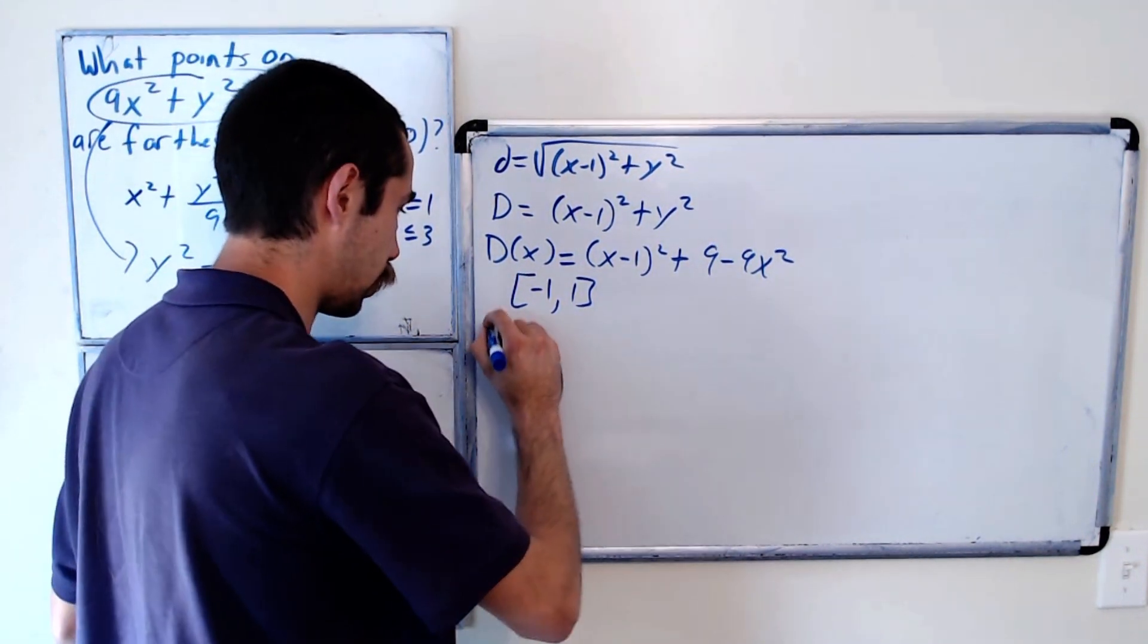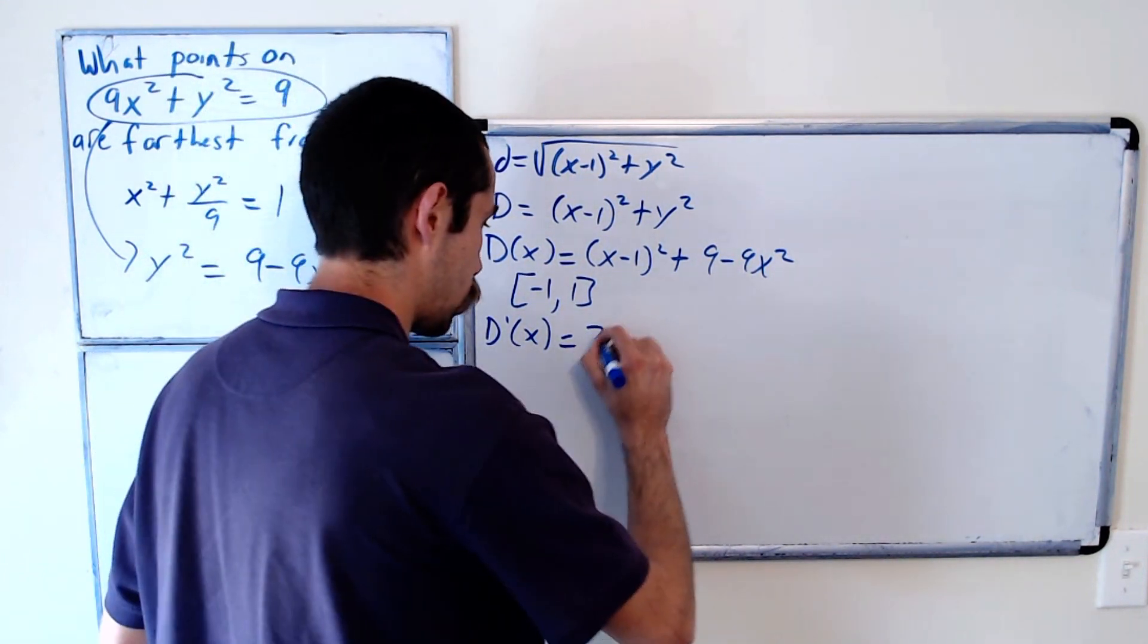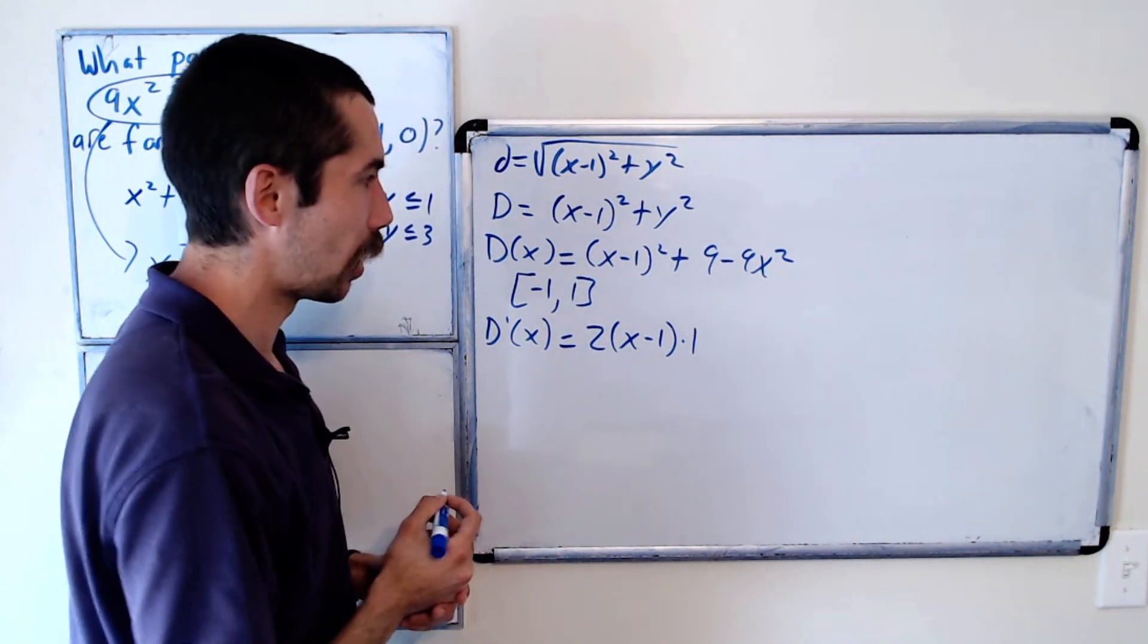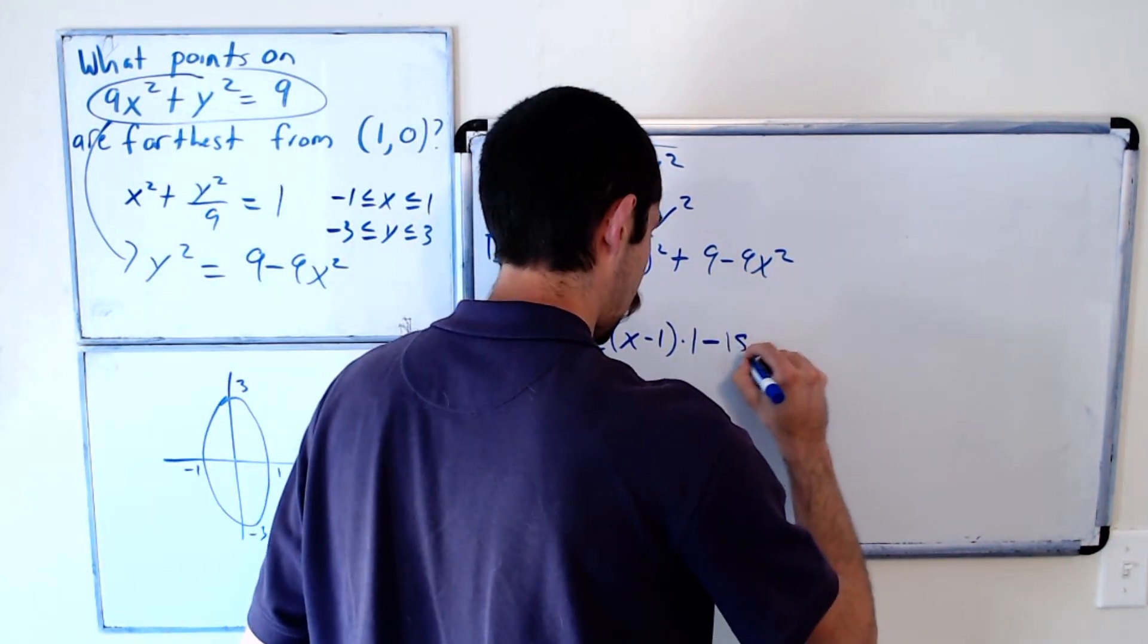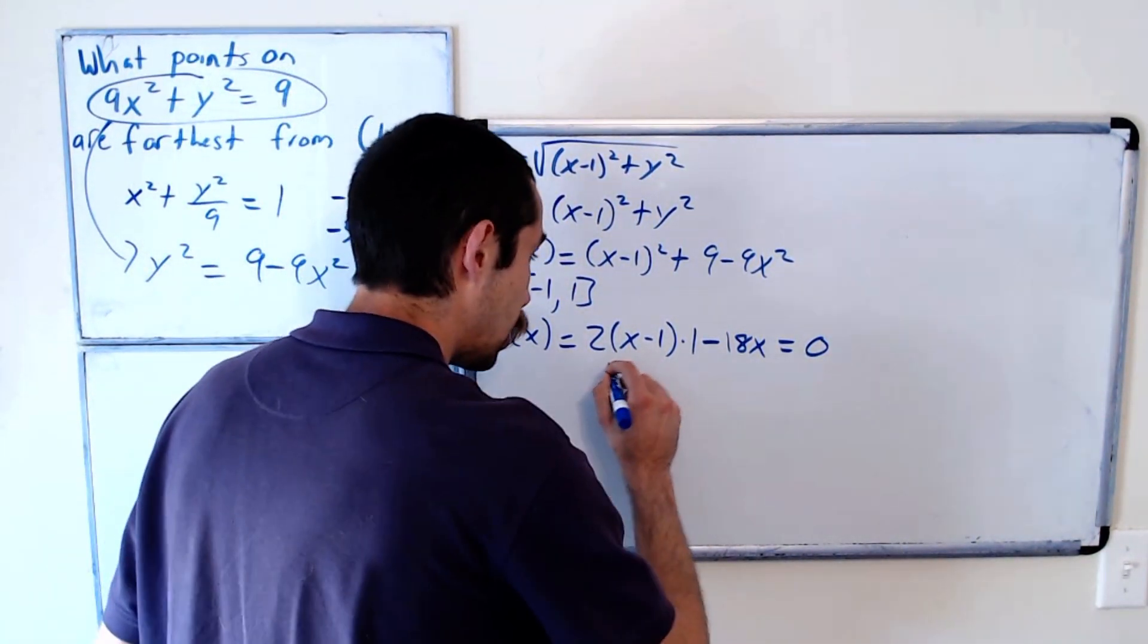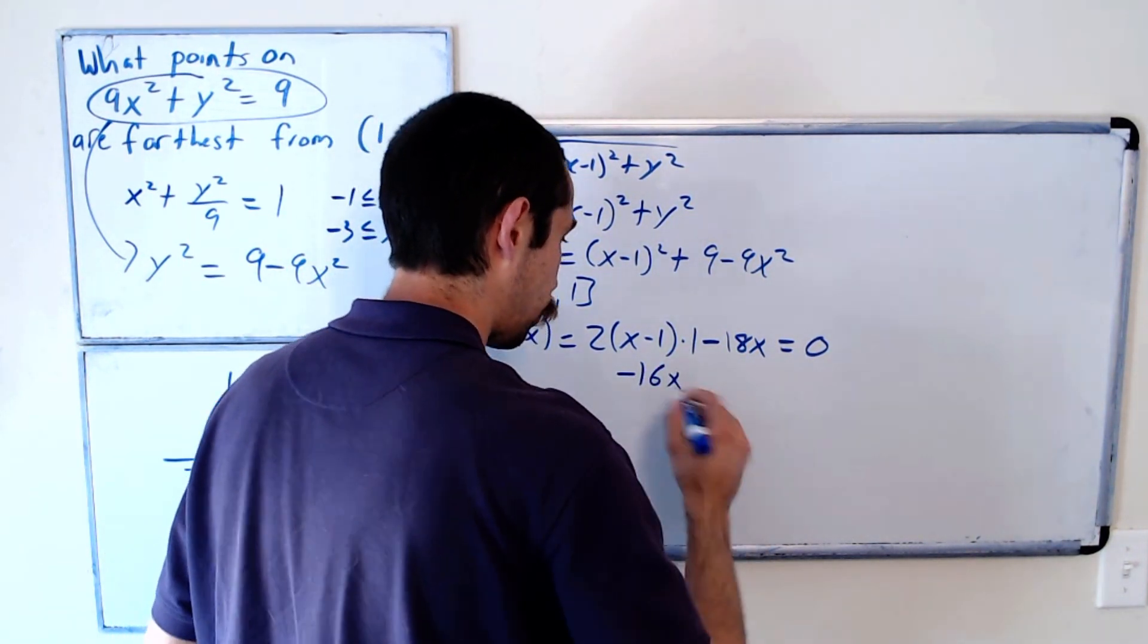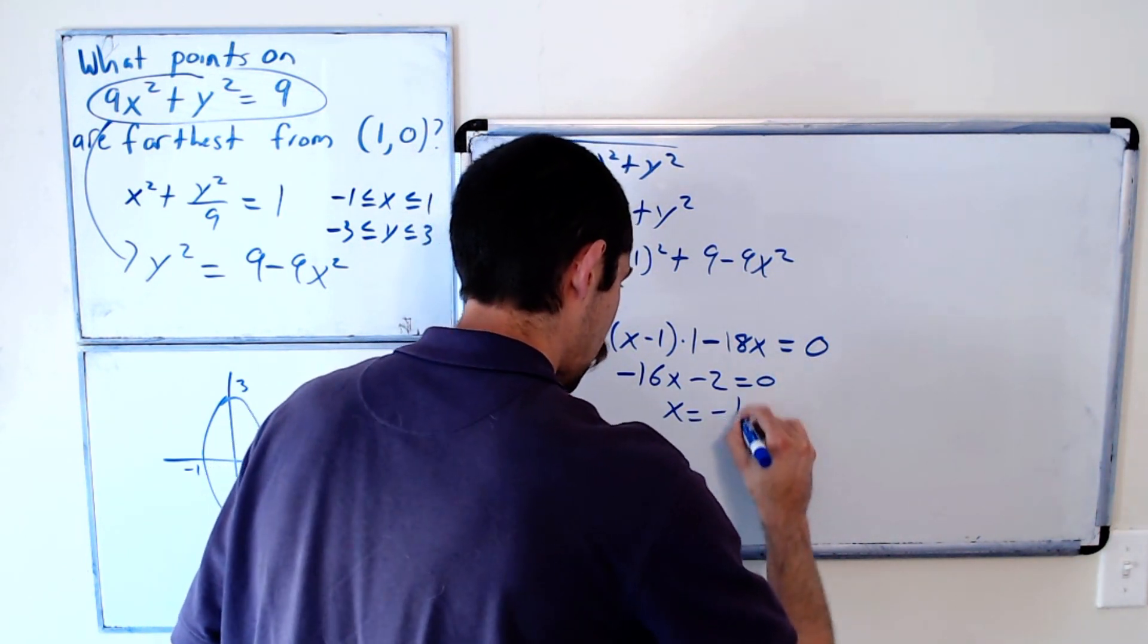We need the derivative D prime of x. This will give us our critical numbers. So 2(x minus 1) times the derivative of the inside, which is 1, plus the derivative of 9, which is 0, minus 18x. And we want to find when this is 0 or undefined. Cleaning this up, we get 2x minus 2 minus 18x, so negative 16x minus 2 equals 0, or x equals negative 1 eighth.